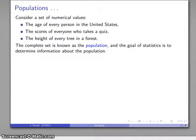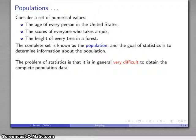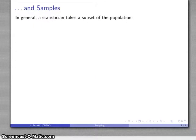The primary goal of statistics is to determine information about the population. However, the problem is that it's in general very difficult to obtain this complete set of data — it's very difficult to find the complete population data. So what we have to do is make do with a subset of the population.